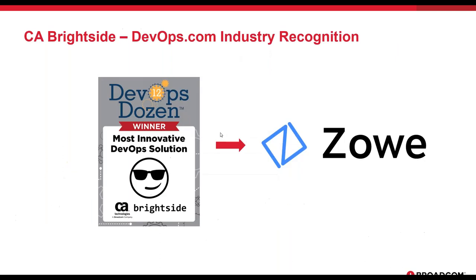A bit about Brightside: it was developed because Broadcom's own developers wanted to interact with the mainframe without going on the mainframe, so they built themselves a command line interface. We recognized this could be useful at other companies and used it as a contribution to Zoe — a consortium and the first open source mainframe project for the z Systems.